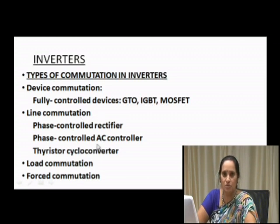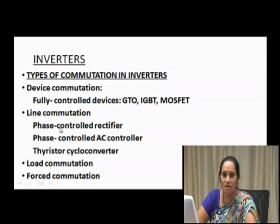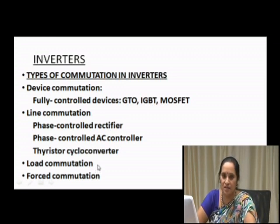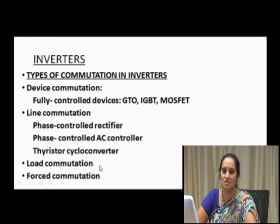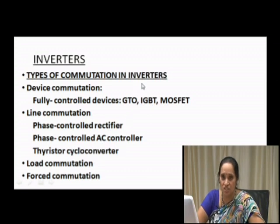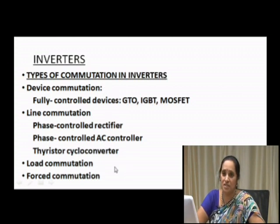Line commutation and load commutation are external commutation types. Under line commutation: phase-controlled rectifiers, phase-controlled AC controllers, and thyristor cycloconverters are included. Under load commutation, the thyristor is turned off by decreasing the current below its holding current value. These different commutation types give rise to different types of inverter circuits.